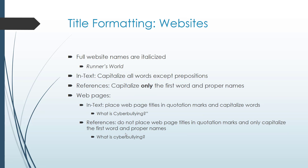For websites: full website names — typically the company name or domain name — are always italicized, both in text and in your citation. In text, capitalize all words except prepositions; in references, capitalize only the first word and proper names. Web pages work more like an article or book chapter: in text, place the web page title in quotation marks and capitalize words, but in the actual citation do not add quotation marks unless they're part of the official title, and only capitalize the first word and proper nouns. For example: 'What is cyberbullying?' — everything lowercase except 'What.' If the original title has punctuation like an exclamation point, make sure you include it.